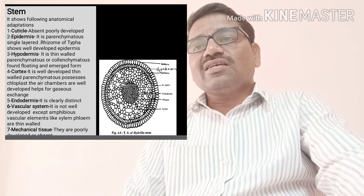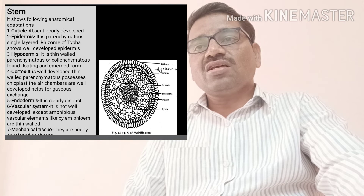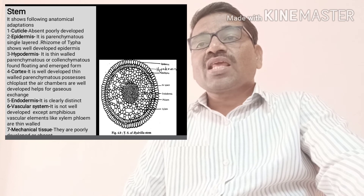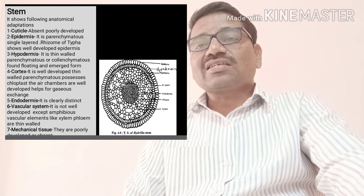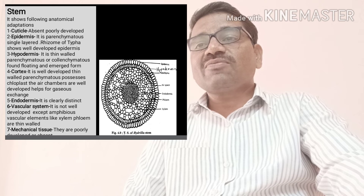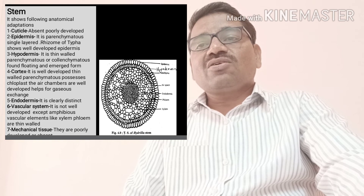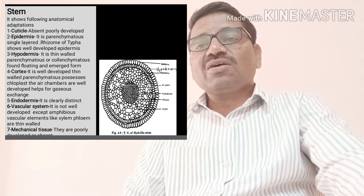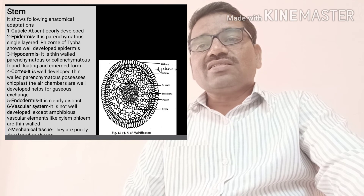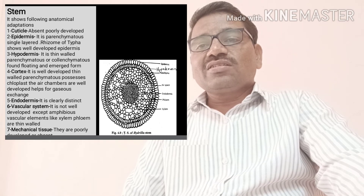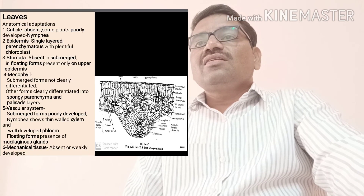Below the hypodermal region, there is cortex — well developed, thin-walled parenchymatous — possessing chloroplasts. The air chambers are well developed and help for gaseous exchange. Below the cortical region, there is endodermis, which is clearly distinct in such hydrophytes in the stem part. Below that, there is a vascular system, which is not well developed. Except in amphibious forms, xylem and phloem are present but thin-walled. The mechanical tissues are poorly developed or absent.